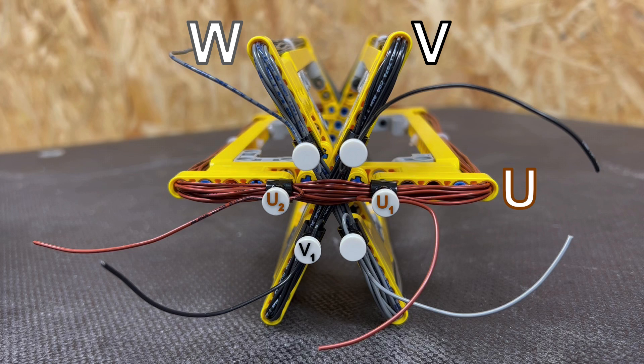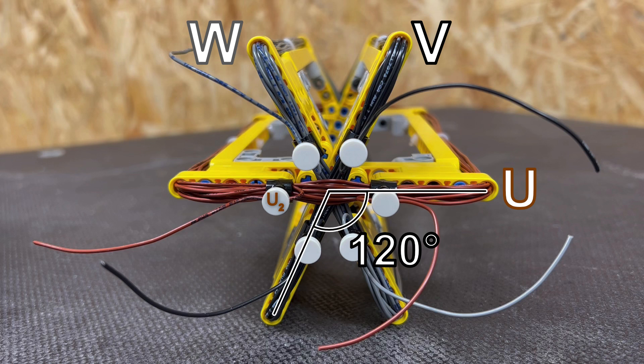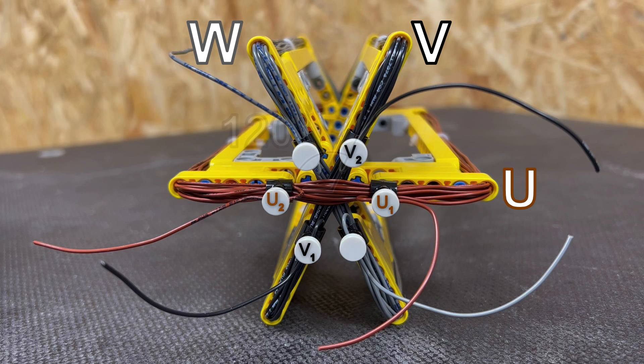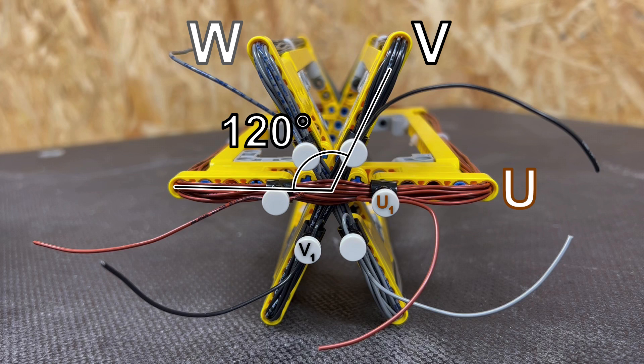This end will be V1. Notice that this end is offset by 120 degrees from U1 and the other end V2 is offset by 120 degrees from U2. And the same principle applies to the final winding with W1 here and W2 here.